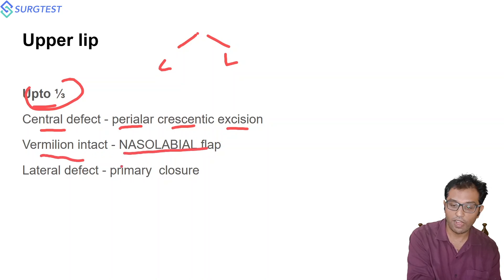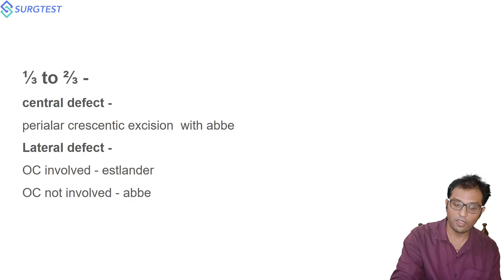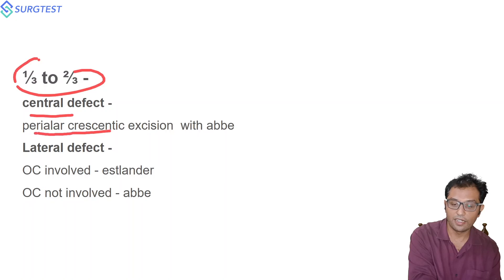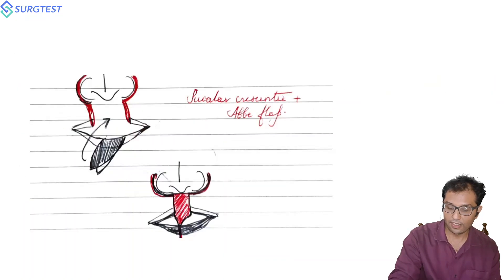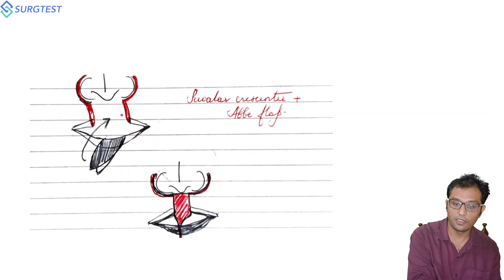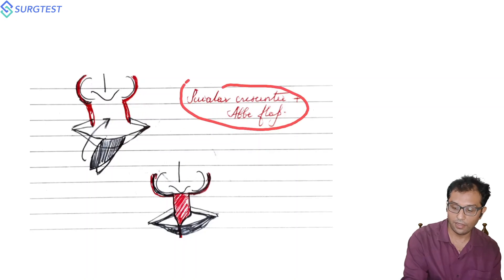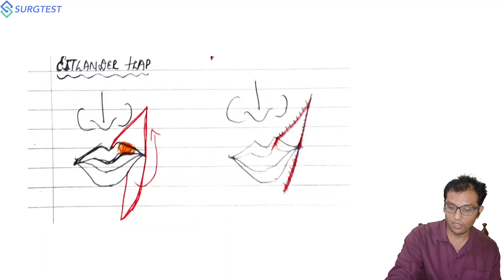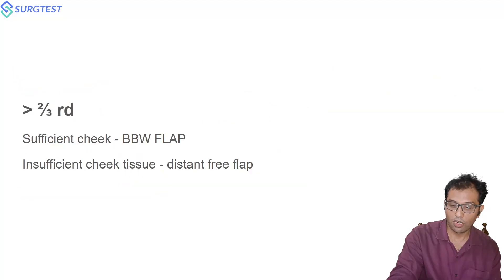For up to one-third central upper lip defects, use perialar crescentic excision. If the vermilion is intact, a nasolabial flap can be used. For lateral defects up to one-third, primary closure can be done. For one-third to two-thirds central upper lip defects, perialar crescentic excision combined with an Abbe flap can be used. For lateral defects one-third to two-thirds: if the commissure is involved use an Estlander flap; if not involved, use an Abbe flap.